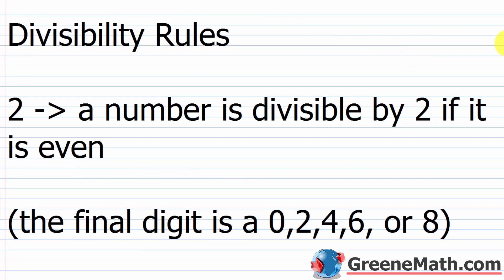If I look at something like 19 divided by 4 — is 19 divisible by 4? No, it's not. If I take 19 and divide it by 4, I get 4 with a remainder of 3. So because there's a remainder involved, 19 is not divisible by 4. When a number is divisible by another, the result has no remainder.